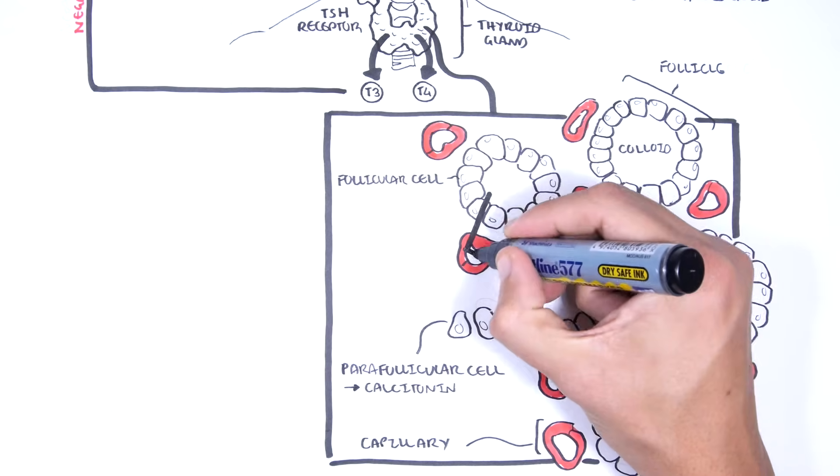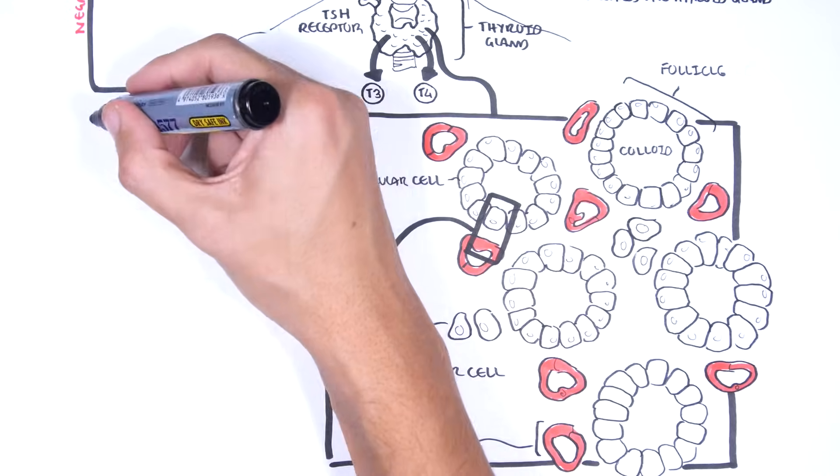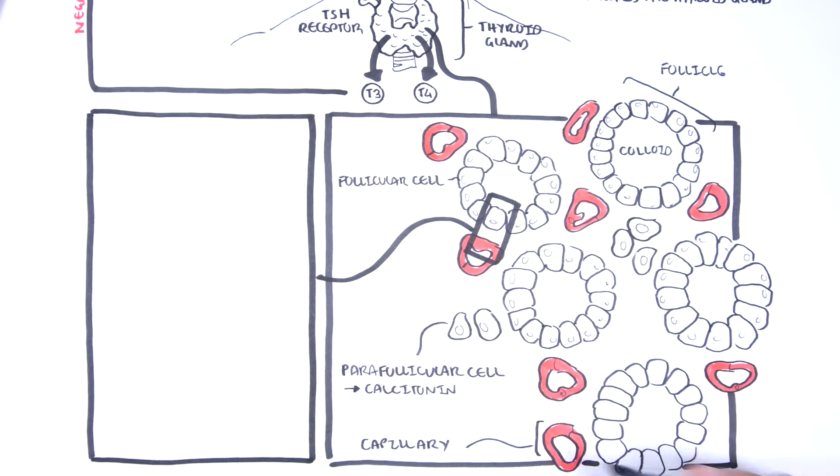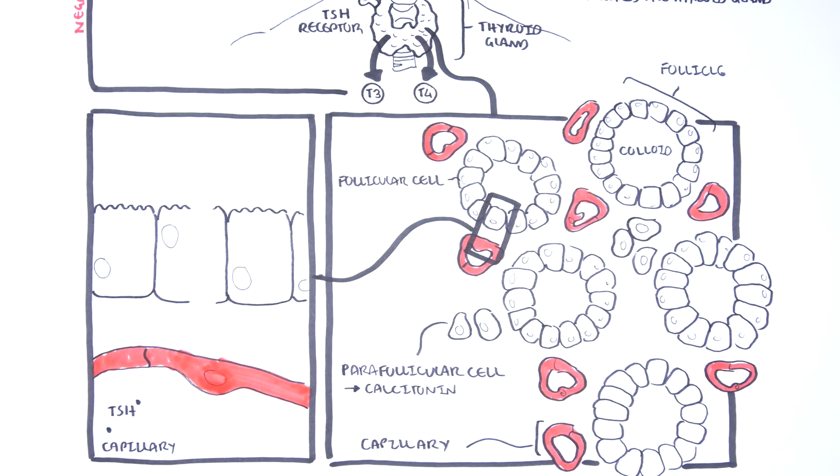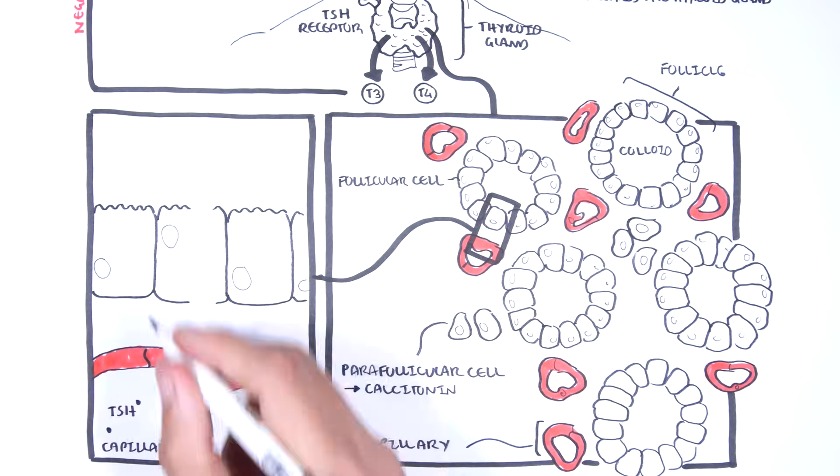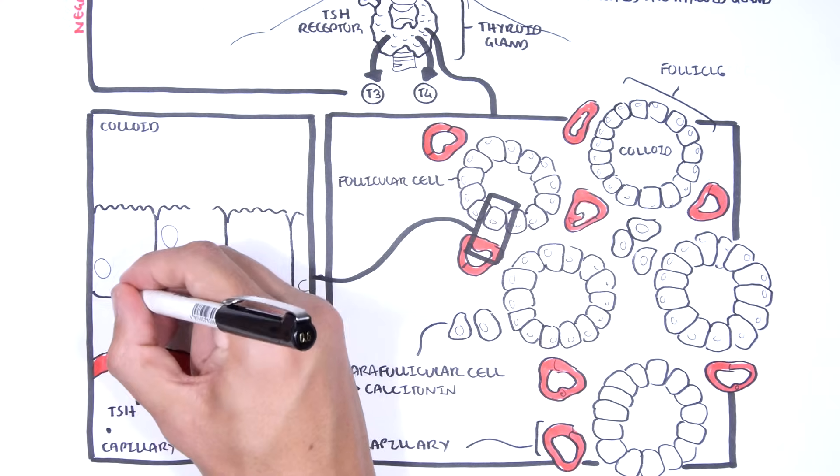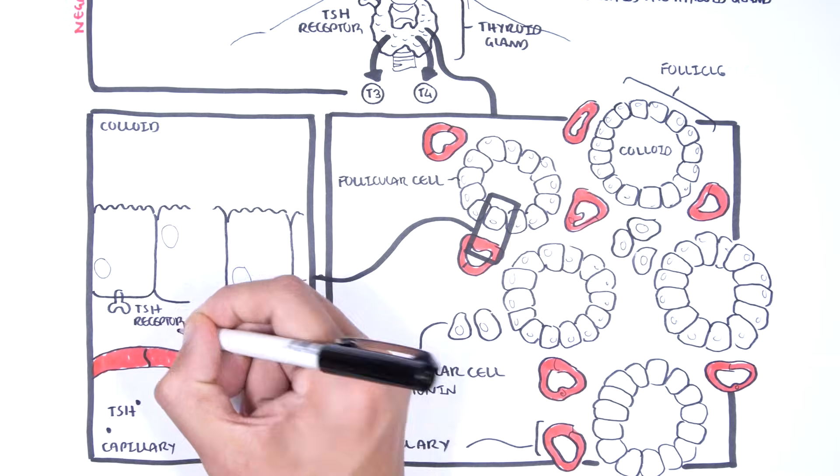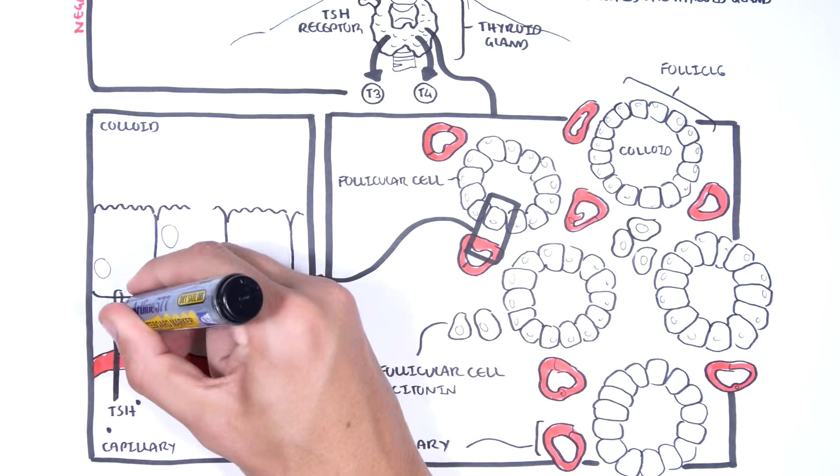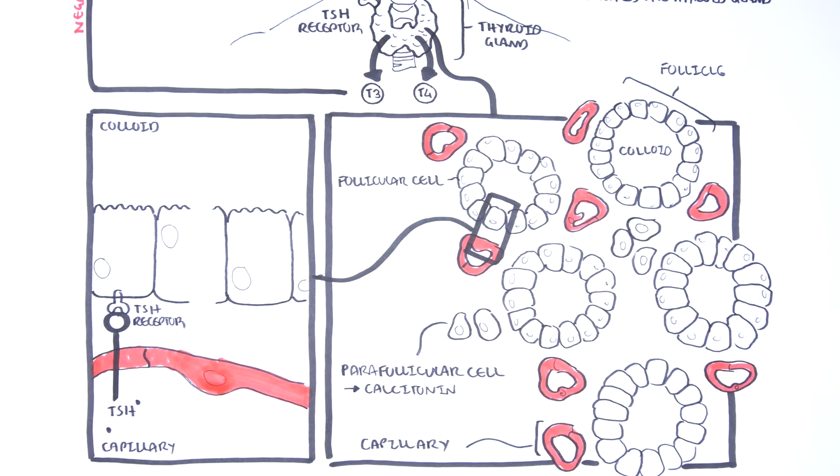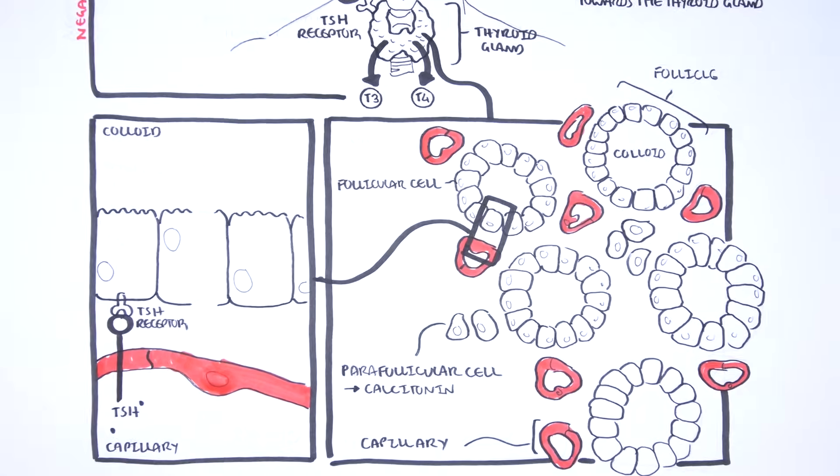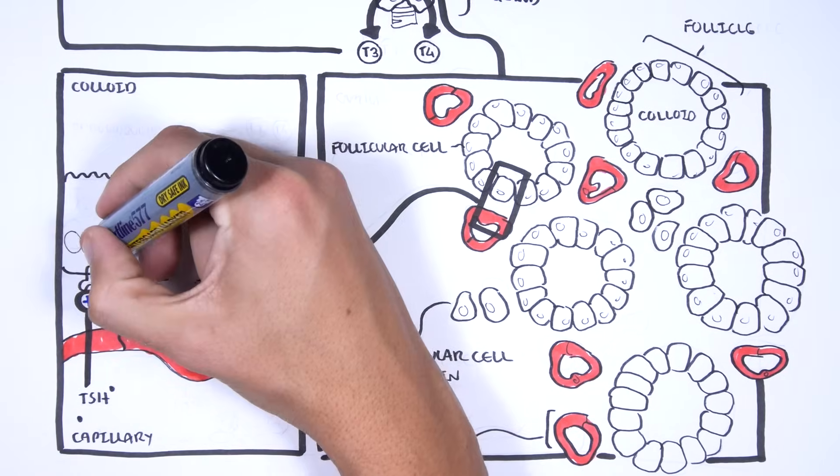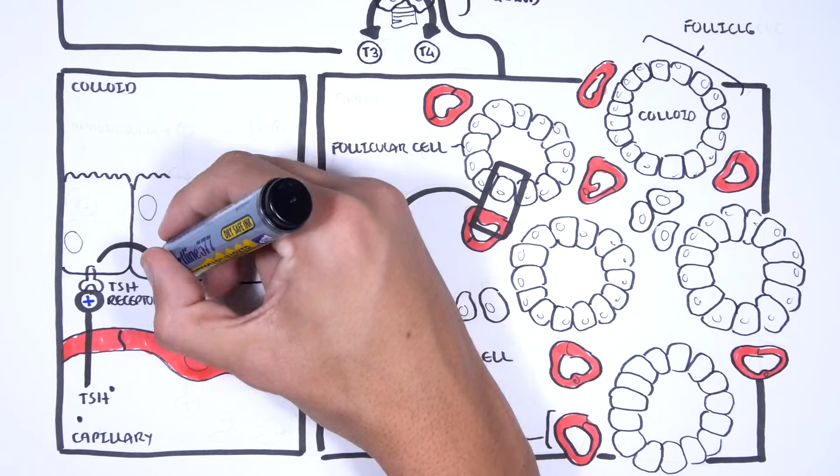Zooming closer now at the interaction between the capillary and the follicle, the capillaries of course bring TSH to the area. The inner part of the follicle is the colloid, the center. On the follicular cells, you have TSH receptors. When TSH reaches the thyroid follicular cells, it binds to TSH receptors, causing a number of things.